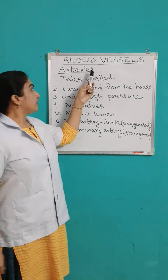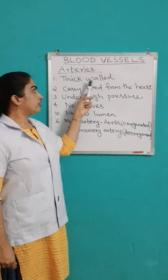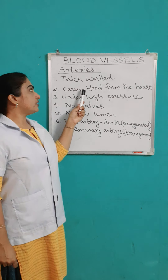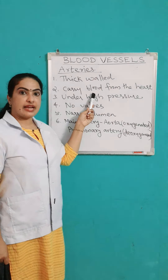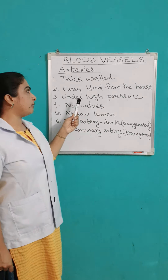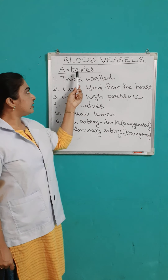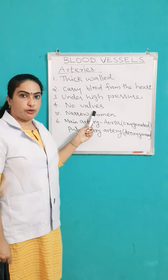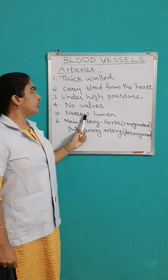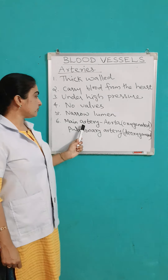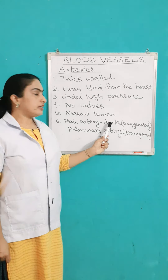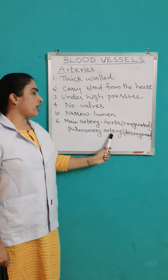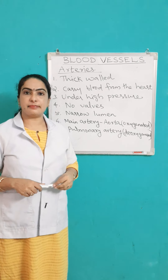Let's recap arteries. Arteries are blood vessels with thick muscular walls. They carry blood away from the heart to different parts of the body. The blood emerges from the heart into the artery under high pressure, and there are no valves. The lumen in case of arteries is narrow. The main artery is known as the aorta. Arteries normally carry oxygenated blood; only the pulmonary artery carries deoxygenated blood from the heart to the lungs.